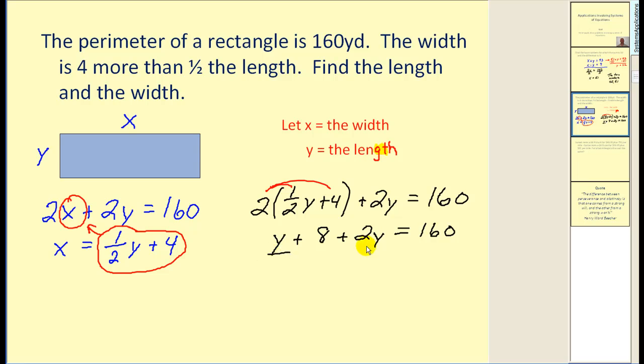We have y plus 8 plus 2y equal to 160. So we'll combine our like terms and then subtract 8. So that would give us 3y. If we subtract 8 from both sides, that would leave us with 152. Dividing by 3, y would be equal to 50 and two-thirds yards.